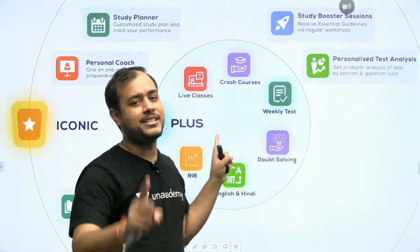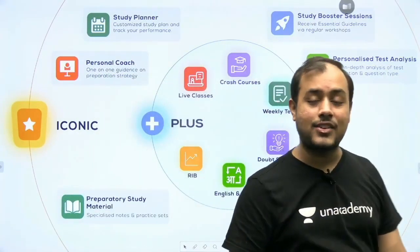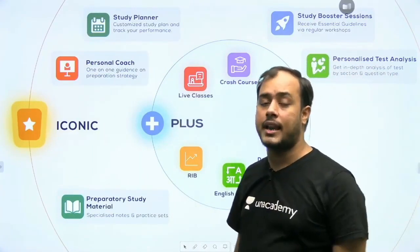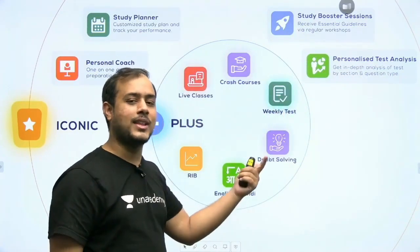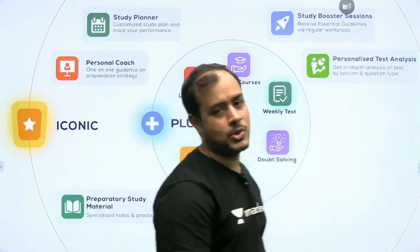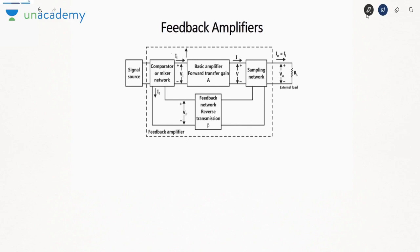If you want to join Unacademy, use the code ANKIT ESE to get my guidance as well as 10% over and above whatever Unacademy offers. Now let's move on to the lecture. In this video we will be starting a new topic called the feedback amplifier. A feedback amplifier is an amplifier in a closed-loop configuration, meaning the output signal is also fed back to the input terminal — a portion of the output signal is connected back to the input.